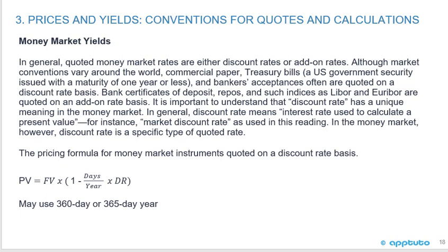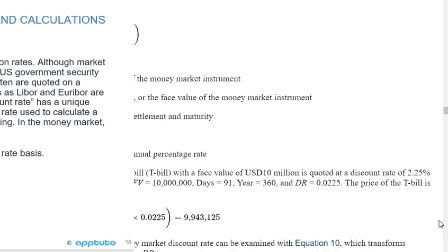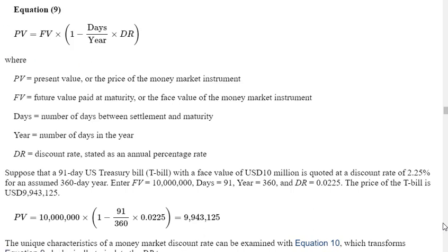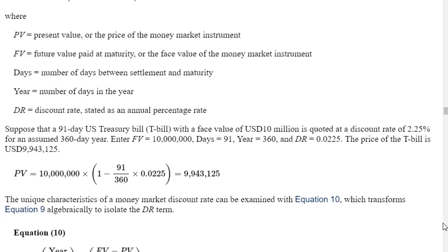Commercial paper, treasury bills, and banker's acceptances are often quoted on a discount rate basis. Bank certificates of deposit, repos, and indices such as LIBOR and Euribor are quoted on an add-on rate basis. The pricing formula for instruments quoted on a discount rate basis is: PV equals FV times bracket 1 minus days over year times DR. For example, a 91-day U.S. Treasury bill with face value of 10 million quoted at a discount rate of 2.25% for a 360-day year gives a price of 9,943,125.